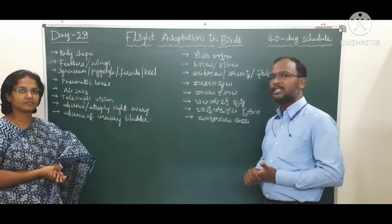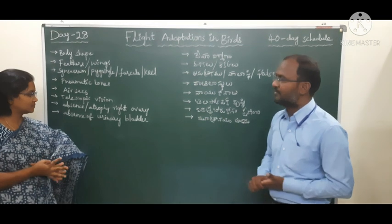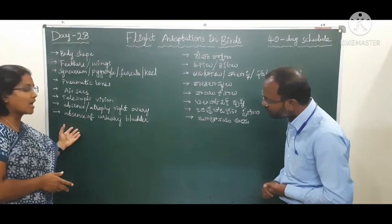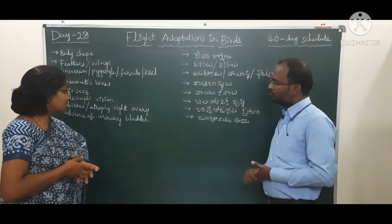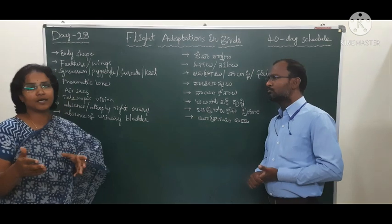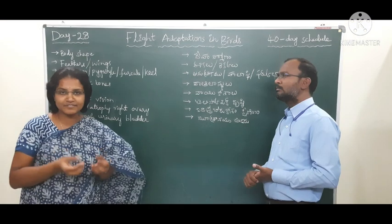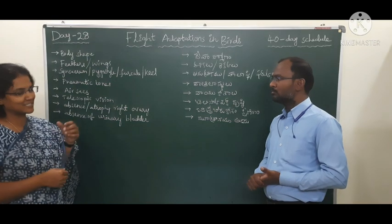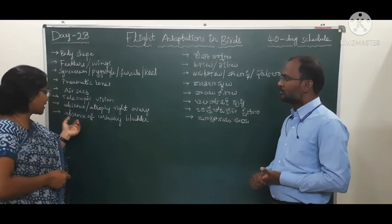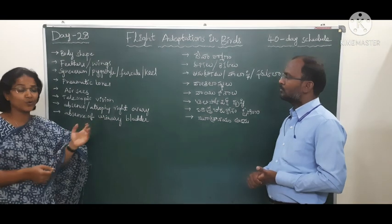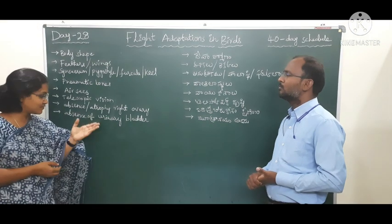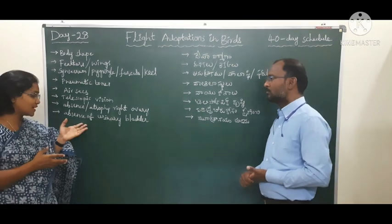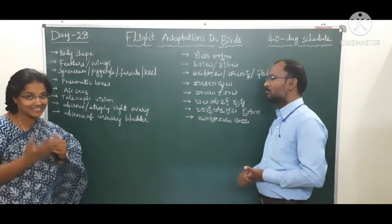The right ovary is completely degenerated and atrophied. Similarly, the absence of a urinary bladder is another adaptation — a bladder filled with urine would increase body weight, so there is no urinary bladder in birds; it has degenerated.